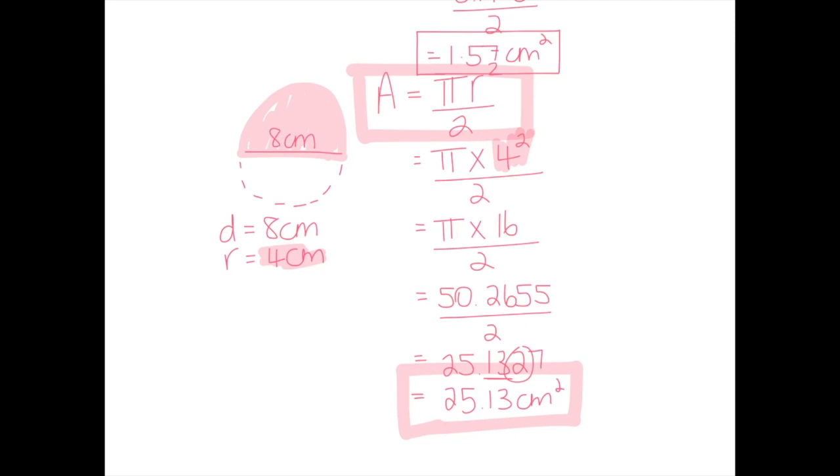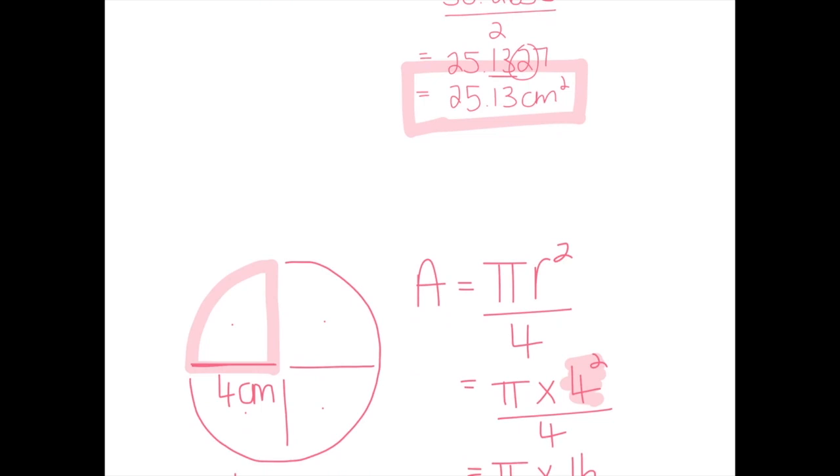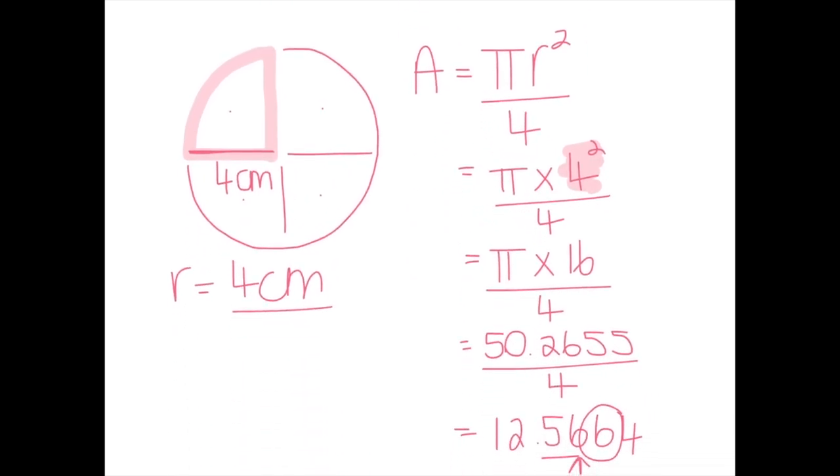You can repeat this with any other segments of circles, as long as you know how many times that segment goes into a whole circle. So if you were dealing with a third of a circle, you'd be able to put pi r squared over three to find out how much a third of that circle is, just like we have done with this two for half a circle, and this four for a quarter of a circle. Thank you so much.